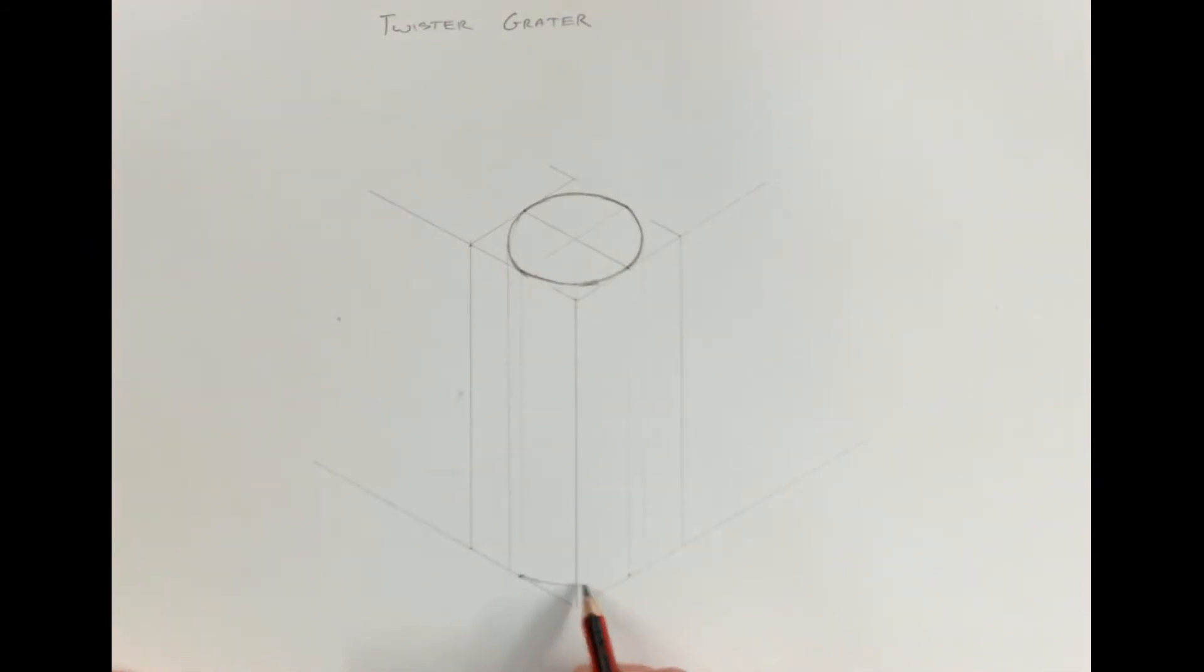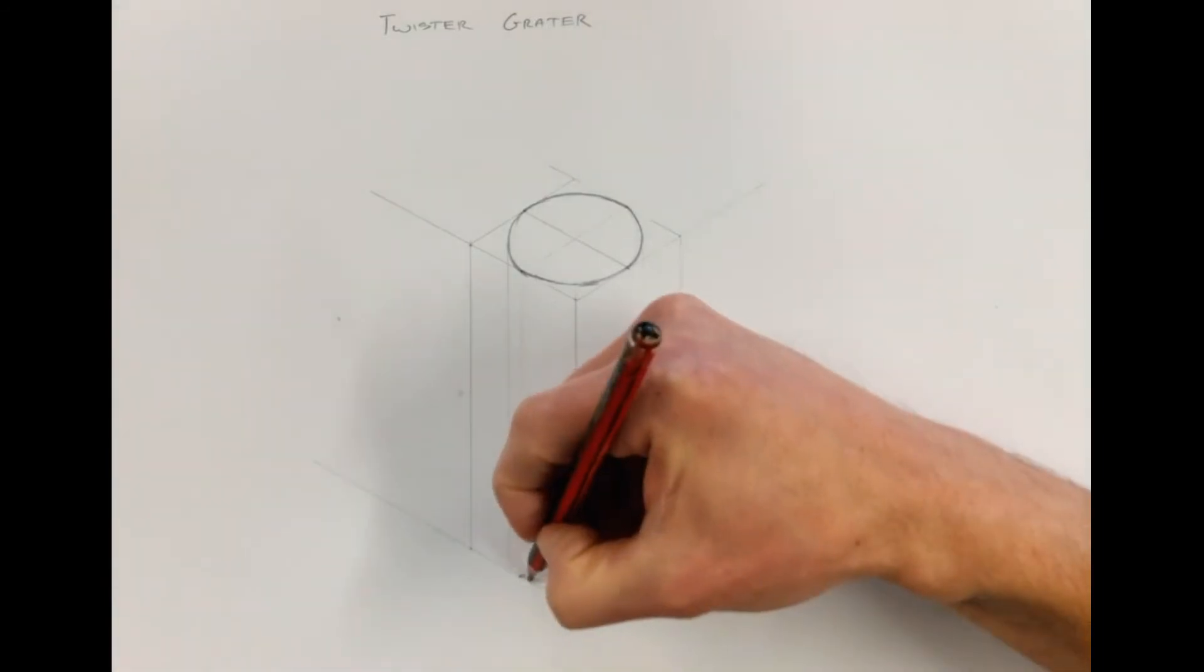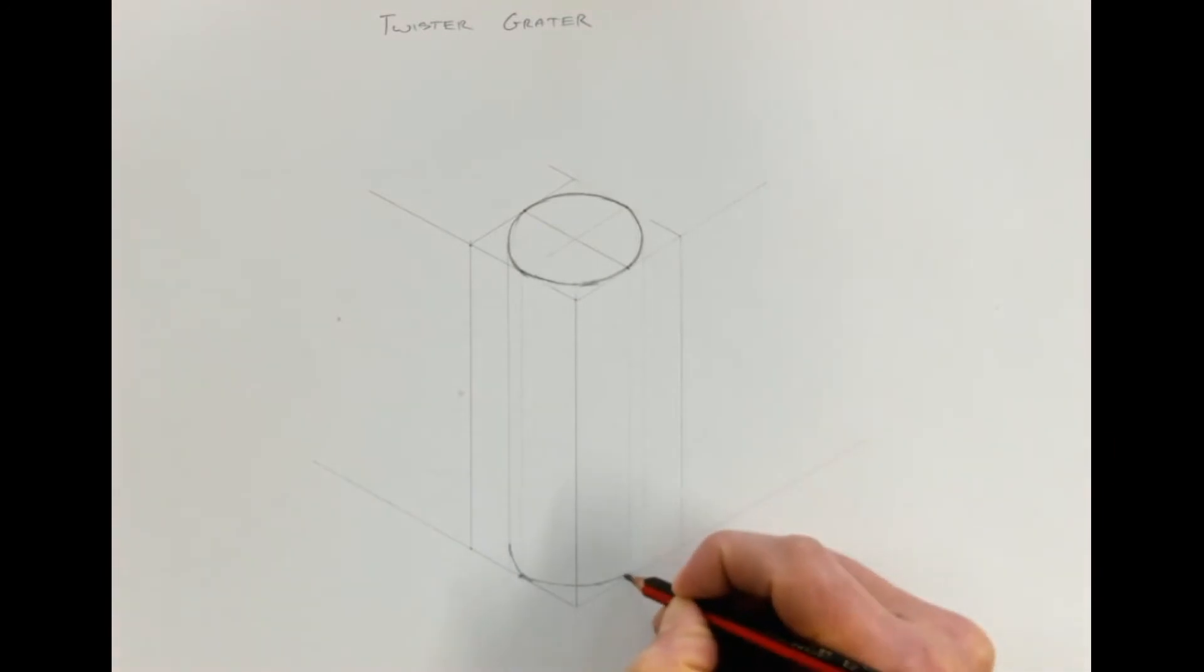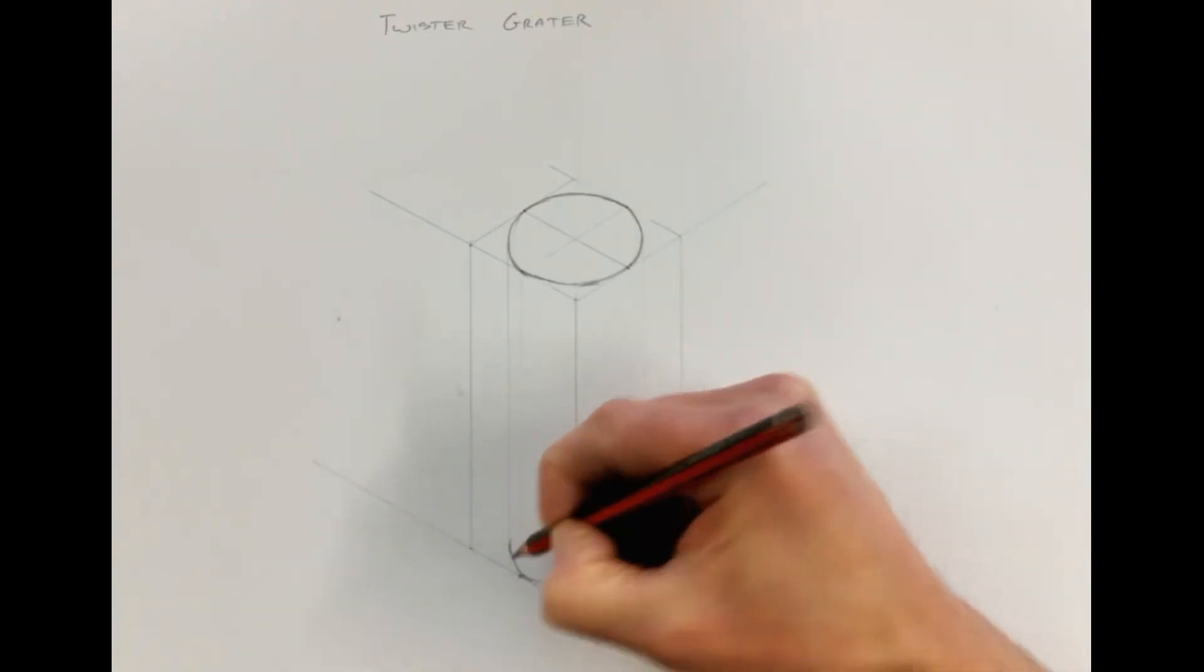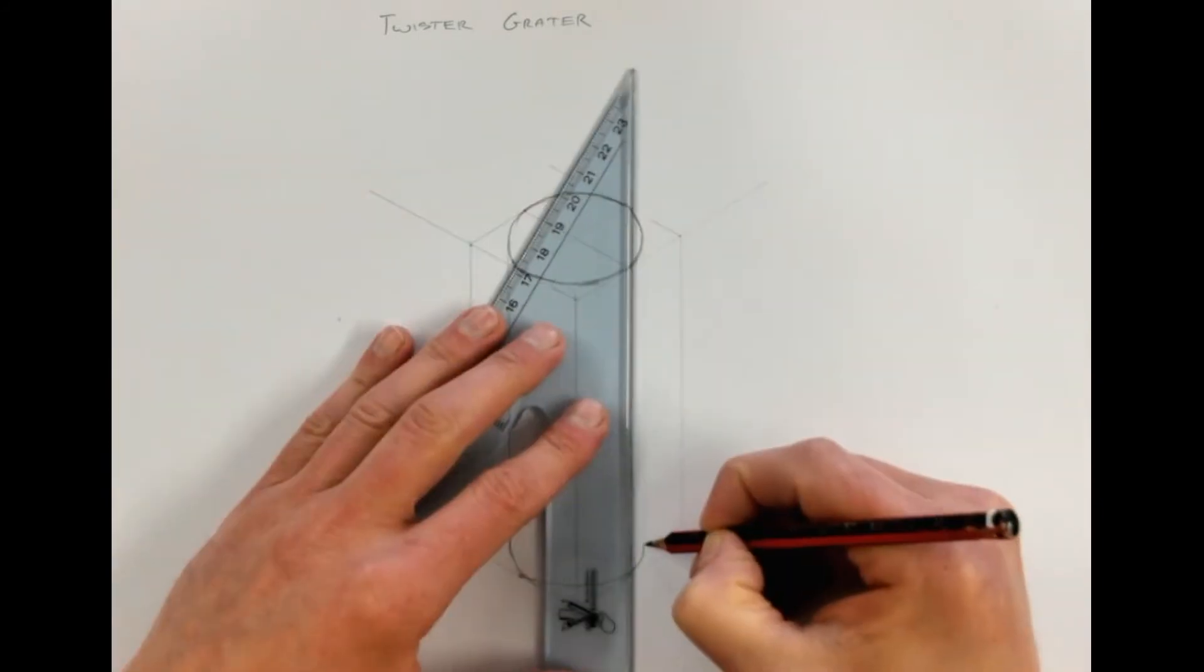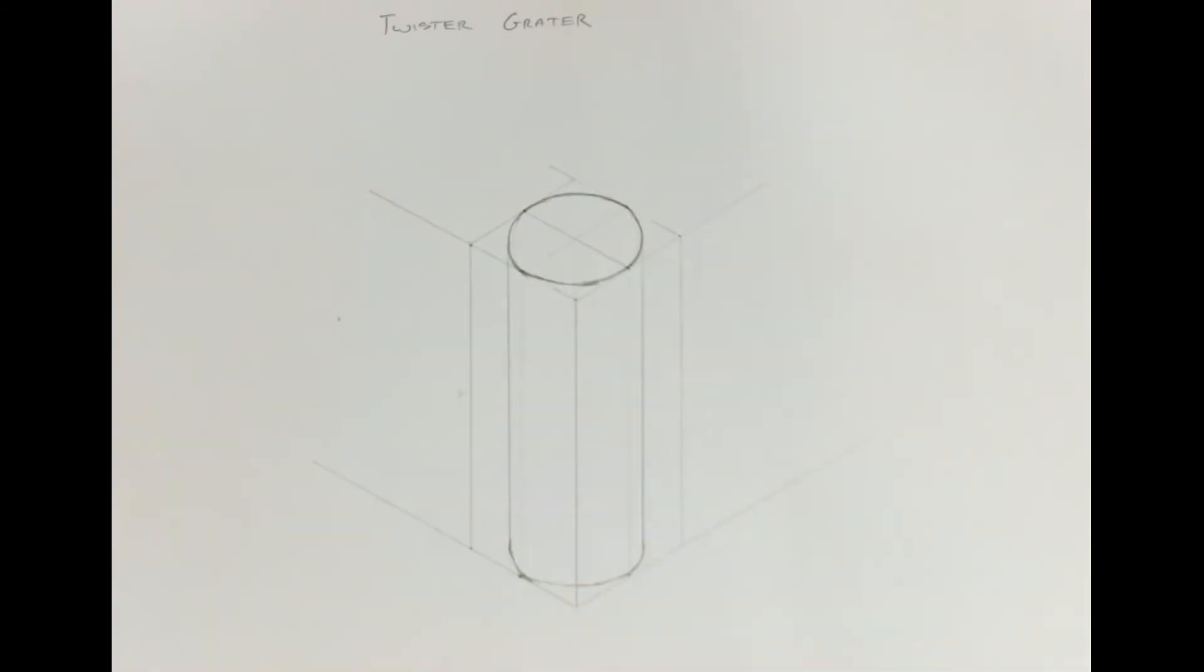And I'm just going to kind of copy the shape that's up on top here. So here is the top of the shape. And I'm going to fade it into the vertical line. There it's ladled in. And that is the general shape of the cylinder drawn in. That is the basis for my cheese grater.